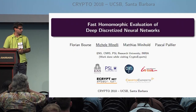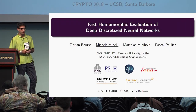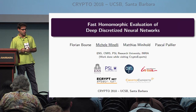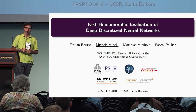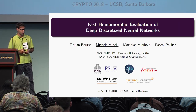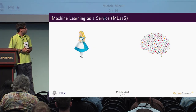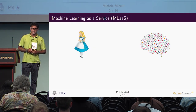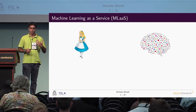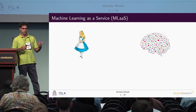This work is about evaluating homomorphic neural networks — we want to evaluate neural networks over encrypted input. Machine learning as a service is gaining more and more importance every day, and new applications come out constantly.